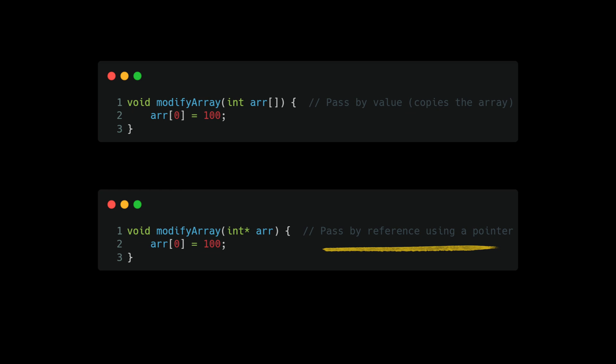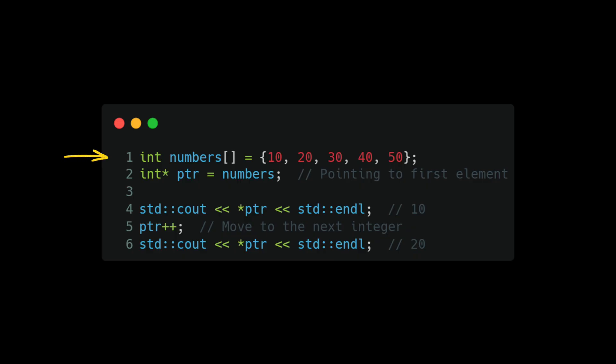This saves both memory and CPU. Even though pointers are tricky and complex, they are essential for writing fast, efficient, and scalable programs. Now let's talk about a more advanced concept: pointer arithmetic. This helps us navigate memory more efficiently. For example, with an array of integers called `numbers`, when we assign it to the pointer `ptr`, we are pointing to the first element of the array.